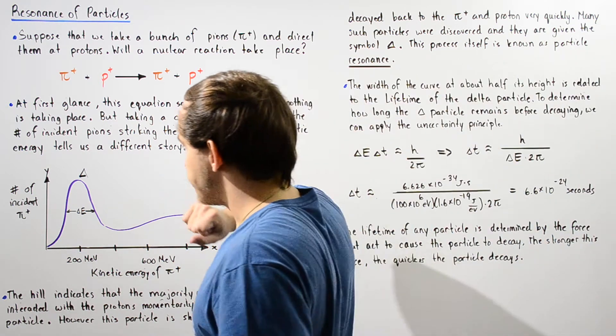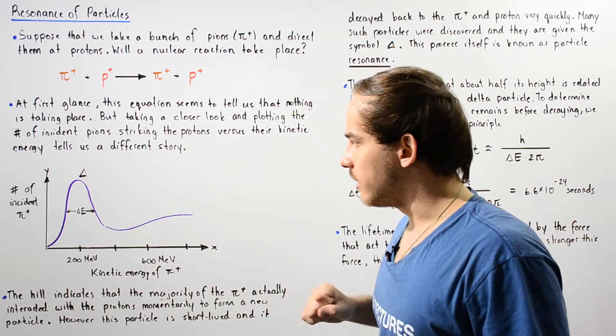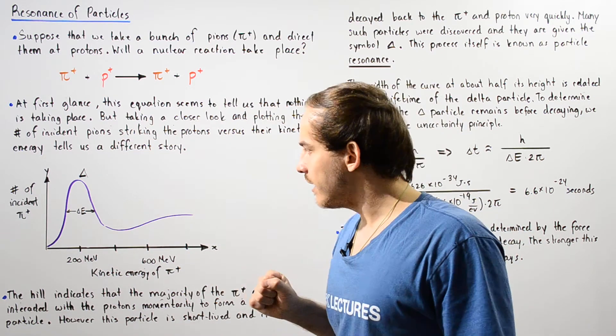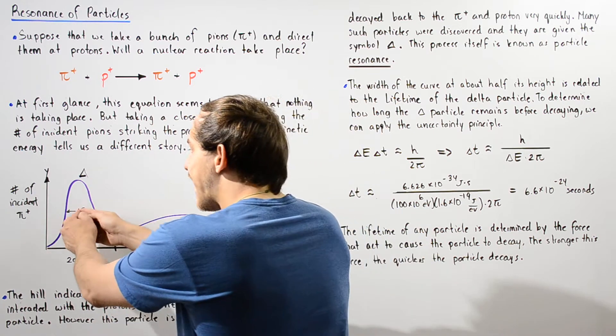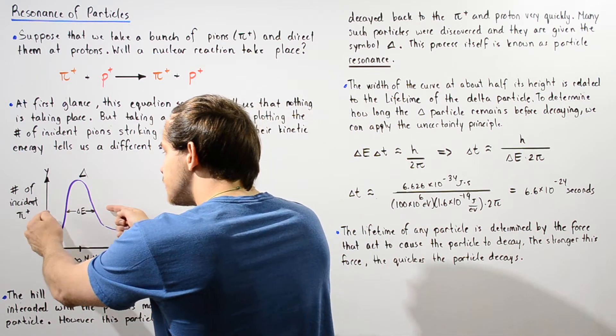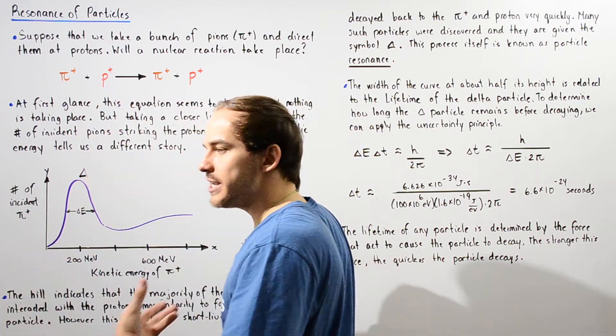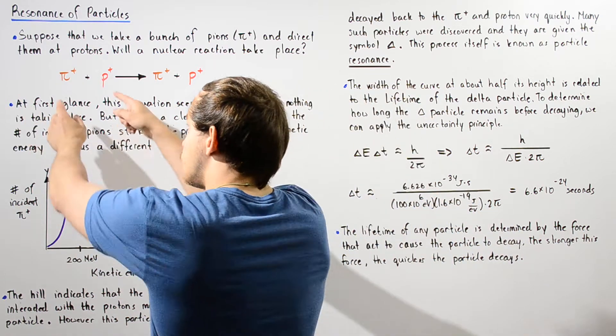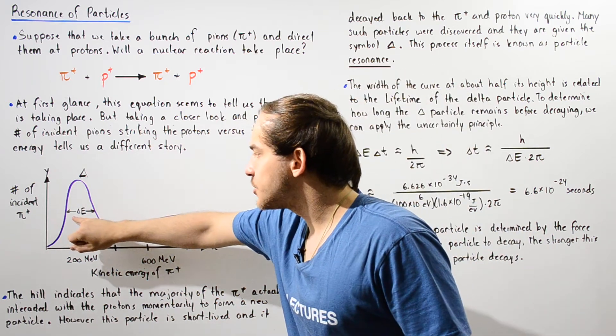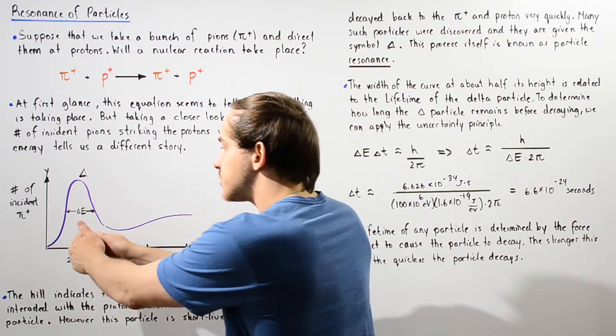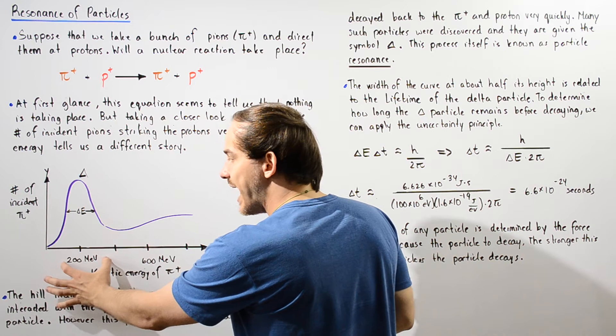So basically, if we examine this hill, what this hill actually tells us—if we go half the height—this energy difference basically tells us how much energy is not conserved when these two particles interact with one another. So we can determine or we can use this graph to approximate the energy.